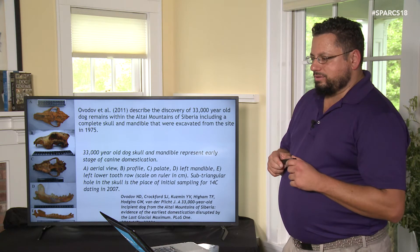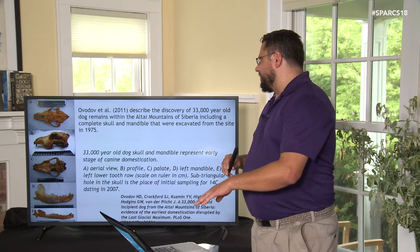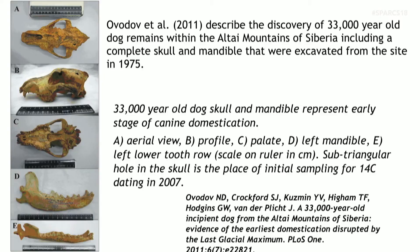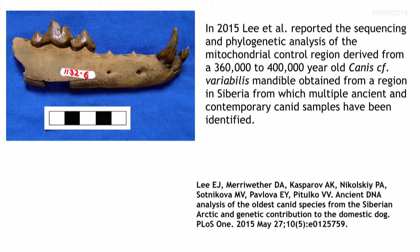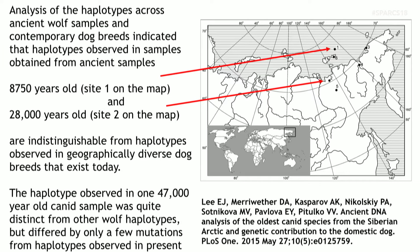A 2011 study describes the discovery of a 33,000-year-old partial skeleton in the Altai Mountains of Siberia, excavated in 1975. The paper describes similarities to dogs rather than wolves, and some think this may mark the beginning of domestication. Fossils going back 300,000–400,000 years are distinct from those found within the last 30,000 years, suggesting the anatomical changes occurring during domestication are starting to appear in that more recent window.